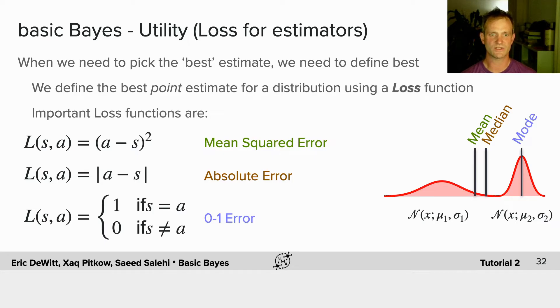Important loss functions that are related to estimators you may be aware of are the mean squared error loss function, the absolute loss function, and the zero-one error loss function. Interestingly, these correspond to the mean, the median, and the mode of a distribution.